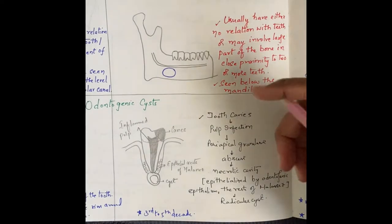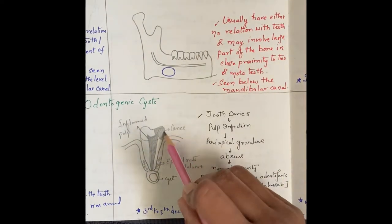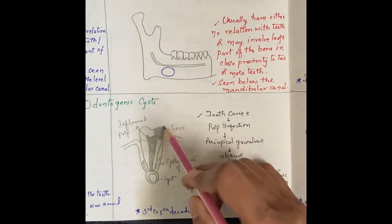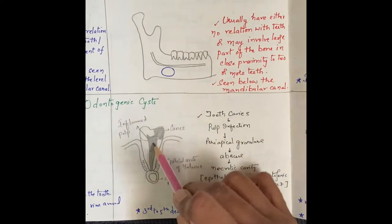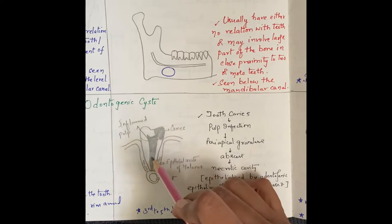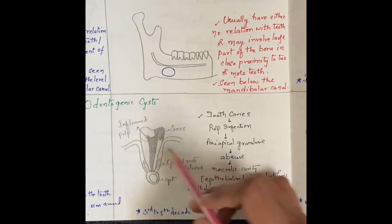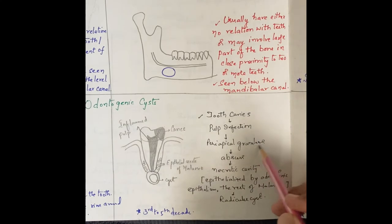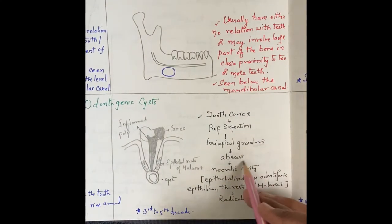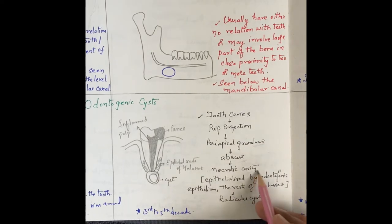Regarding the pathology of the radicular cyst: we have a carious tooth, and due to infection the spread goes into the pulp. When there is pulp infection, first there is periapical granuloma formation. After periapical granuloma formation, next it forms an abscess, then there will be a necrotic cavity within.